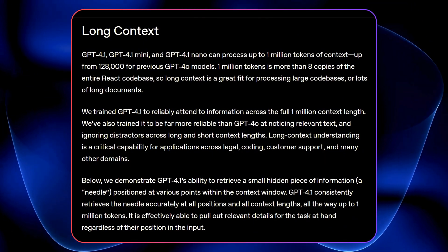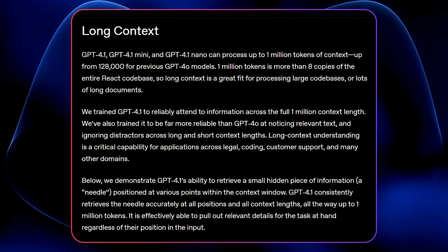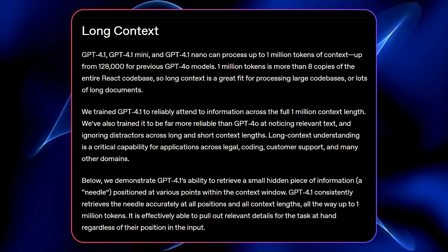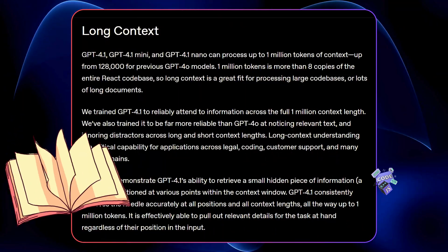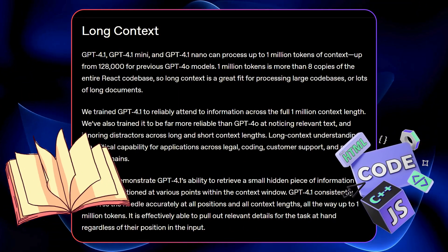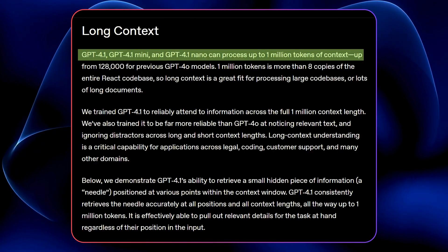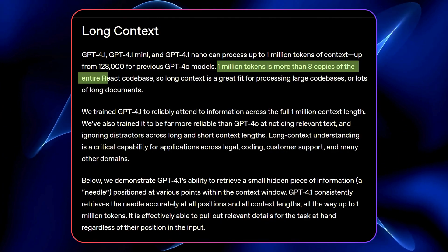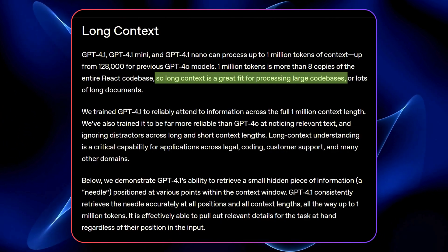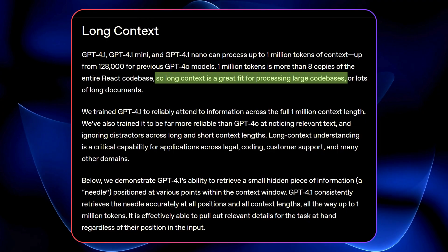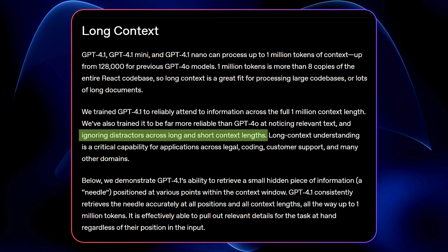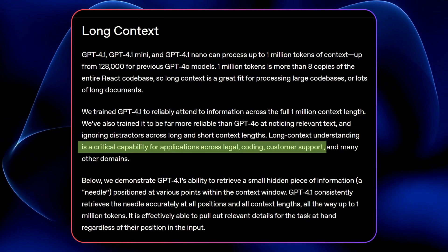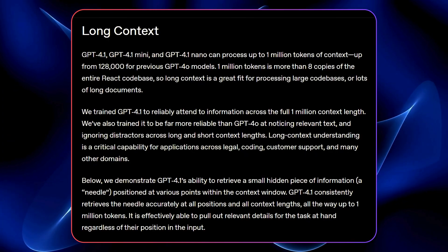But the real breakthrough is context processing — this is where the models really flex their muscles. Imagine being able to process not just a paragraph or short sentence, but an entire book or code base. GPT 4.1, Mini, and Nano can all handle 1 million tokens — that's over 8 full copies of the entire React code base. With this kind of context capability, AI can process large chunks of information without losing the plot. Whether you're analyzing a giant dataset or reading a lengthy contract, these models keep track of the context, which means better results.